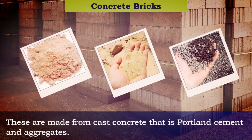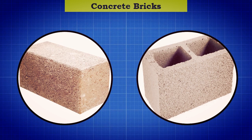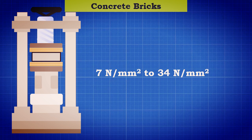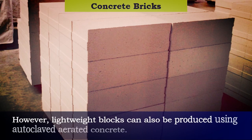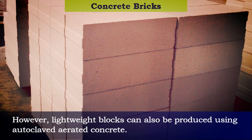Concrete bricks: these are made from cast concrete, that is Portland cement and aggregates. Concrete bricks are generally manufactured as solid blocks or hollow concrete blocks. The compressive strength of concrete masonry units varies from approximately 7 to 34 Newton per millimeter square. Generally, concrete blocks are heavier than clay bricks; however, lightweight blocks can also be produced using autoclaved aerated concrete.